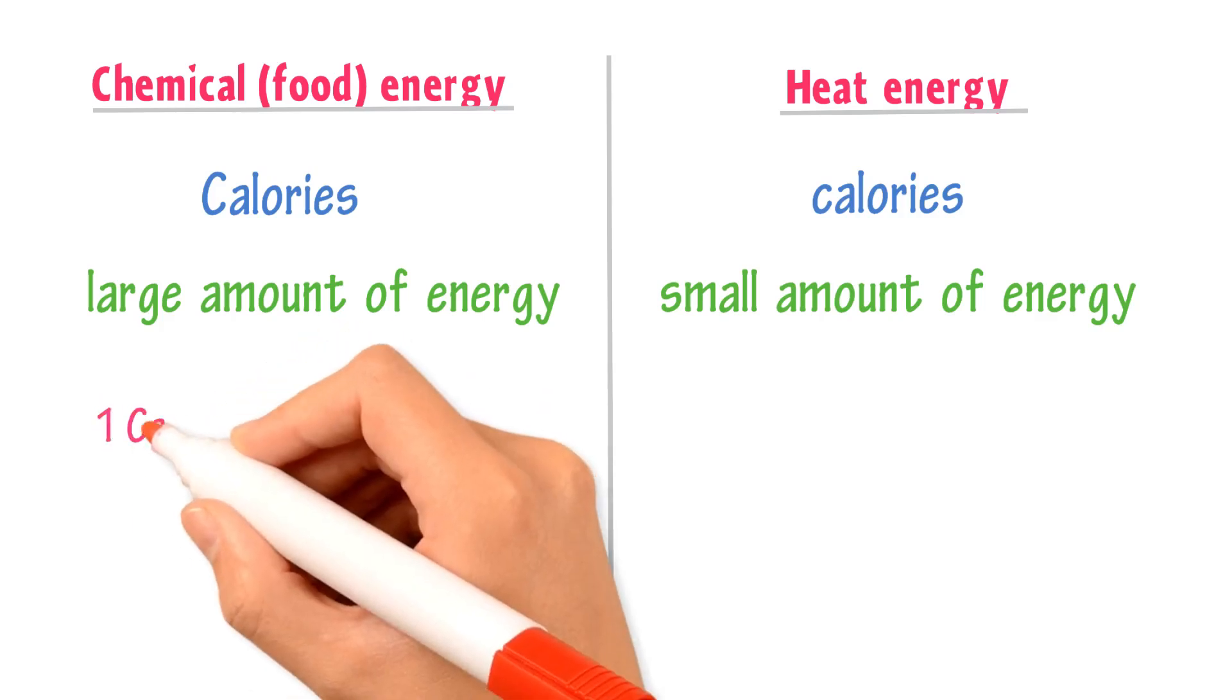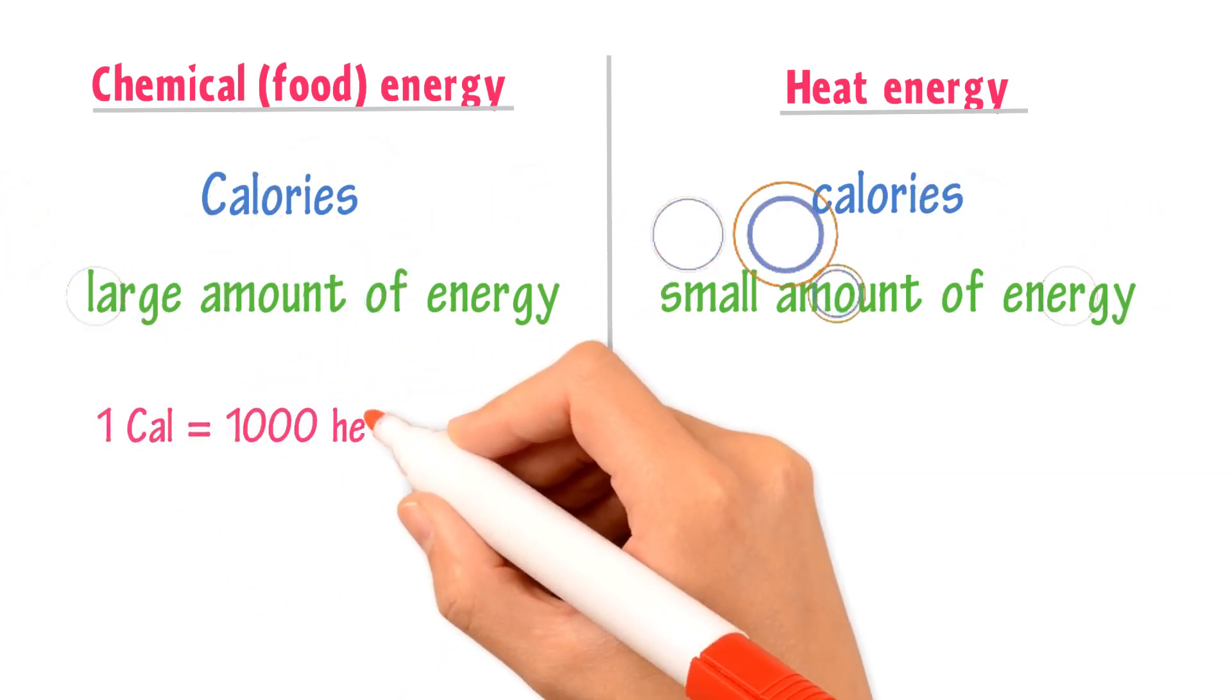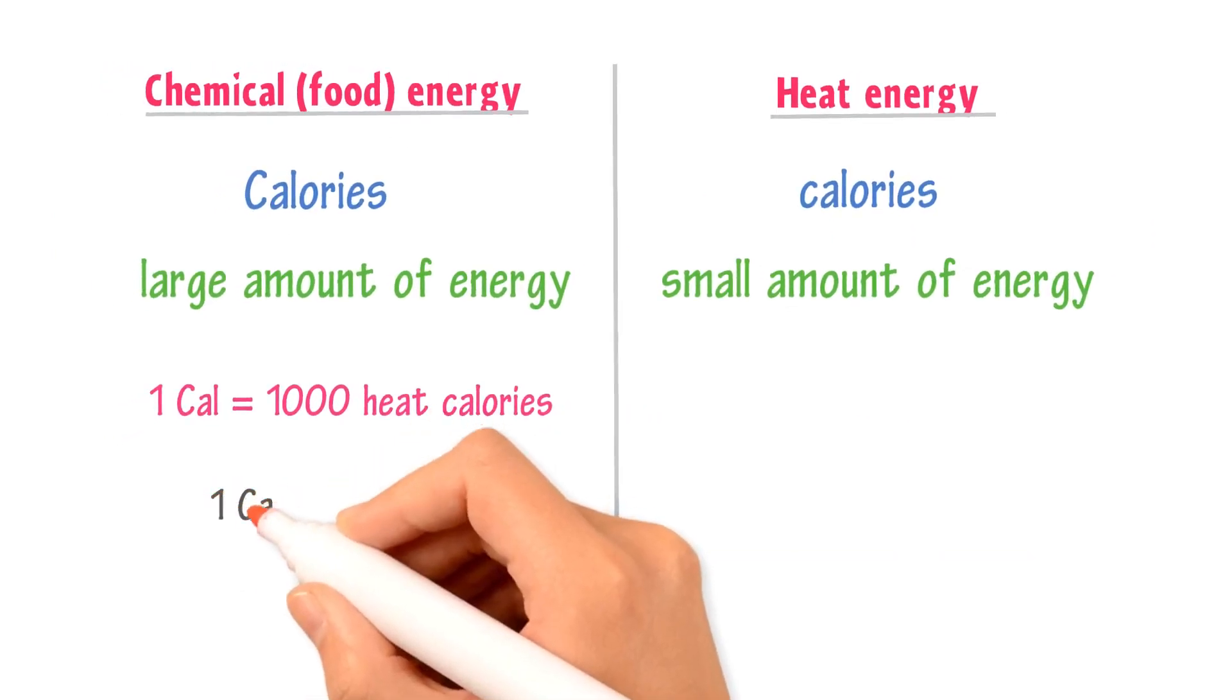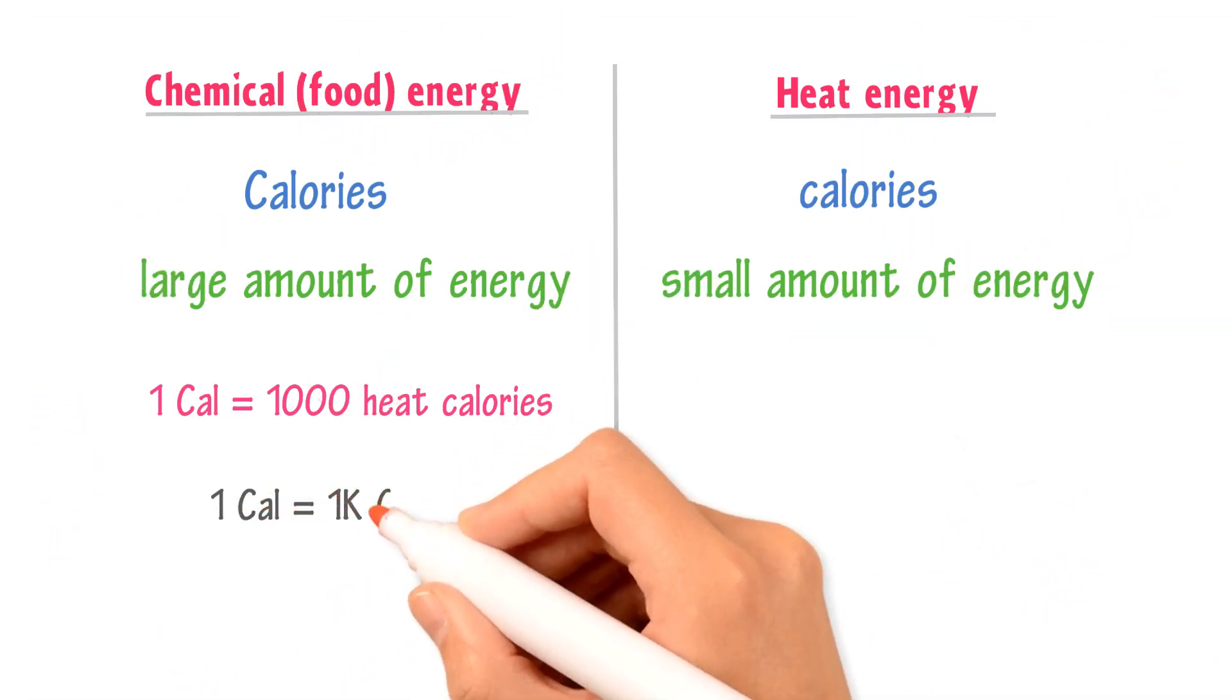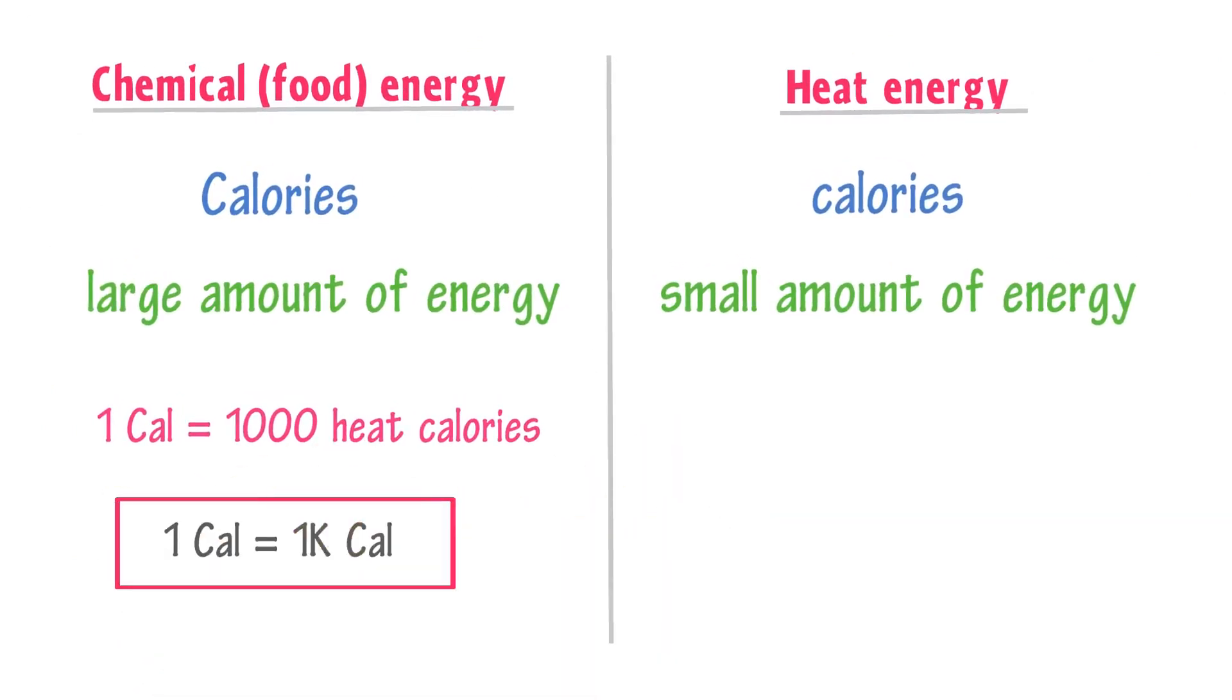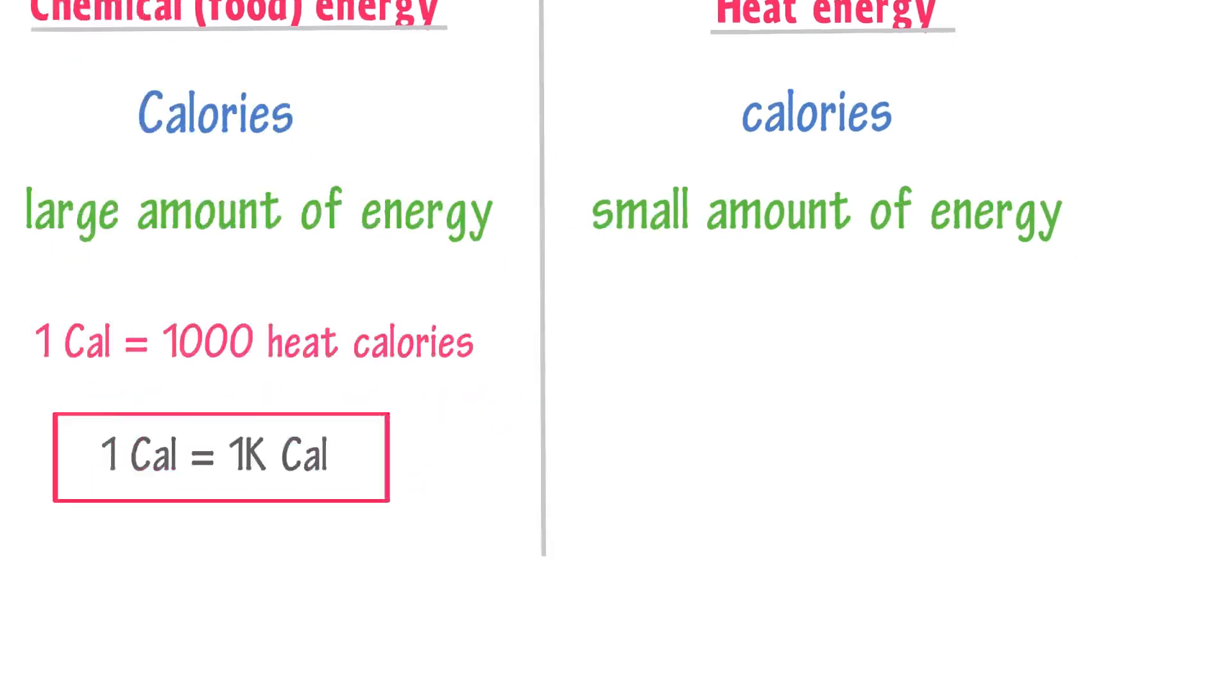In fact, one food calorie is equal to 1000 heat calorie. Hence, we often write it as one food calorie is equal to 1 kcal. It means that one food calorie is equal to 1000 heat calories.